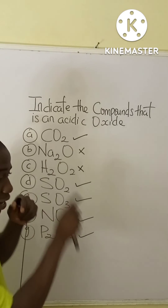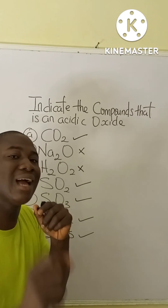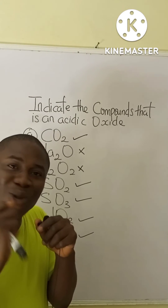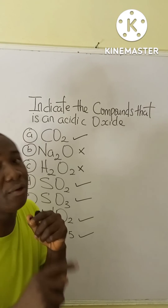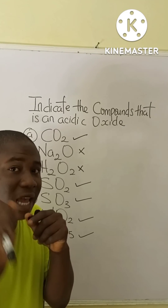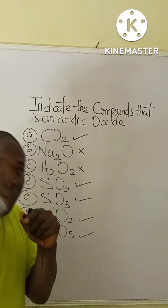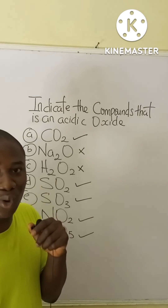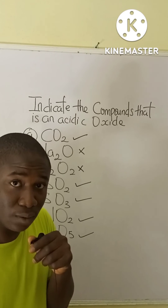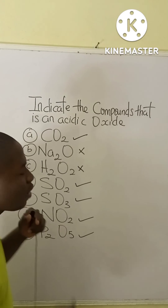When SO₂ reacts with water, it forms sulfurous acid — not sulfuric acid — with the chemical formula H₂SO₃. When SO₃ reacts with water, it forms the very common sulfuric acid, H₂SO₄.